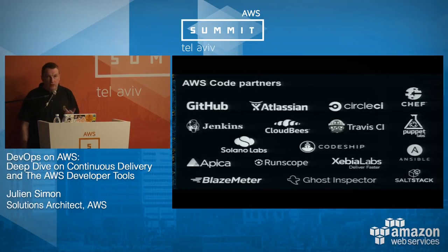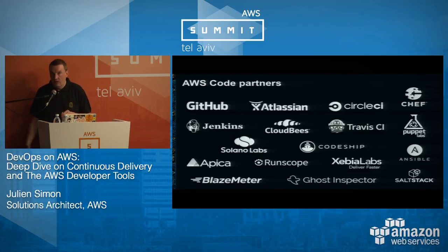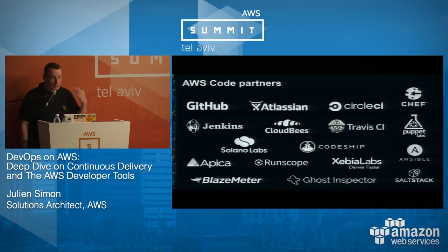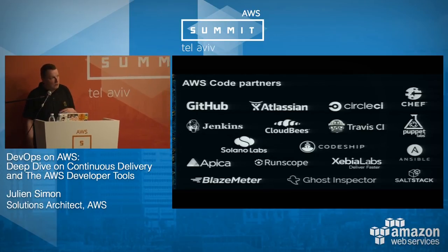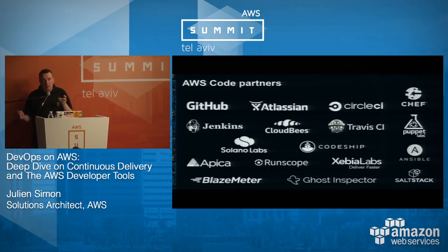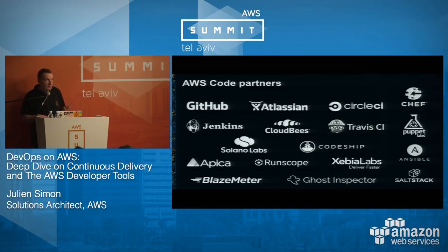Another cool thing is that CodeDeploy and CodePipeline are compatible with many different tools you're already using. I don't have time to cover them all, but today we'll look at GitHub and Jenkins. All these other tools work with CodeDeploy or CodePipeline, so you can mix your own existing tools with AWS tools, or use the pipeline just to integrate all your external tools.